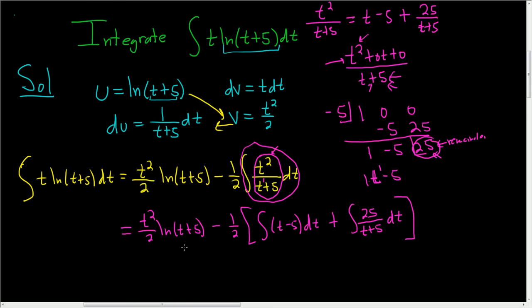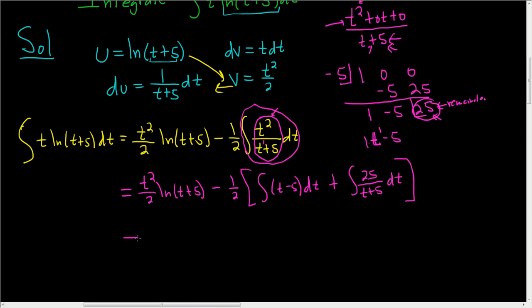So let's keep going. So this is going to be equal to t squared over 2, the natural log of t plus 5 minus 1 half, and I'll go ahead and integrate all of this stuff. Here we use the power rule. There's a 1, so we're going to get t squared over 2, and then minus 5t, and then plus 25.